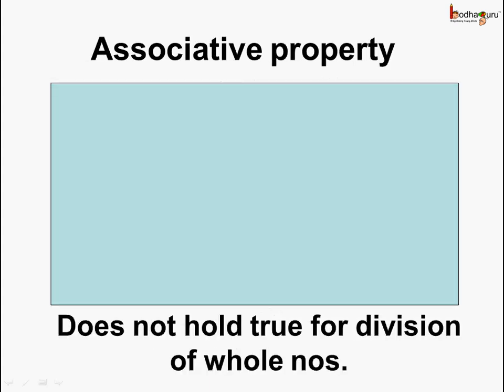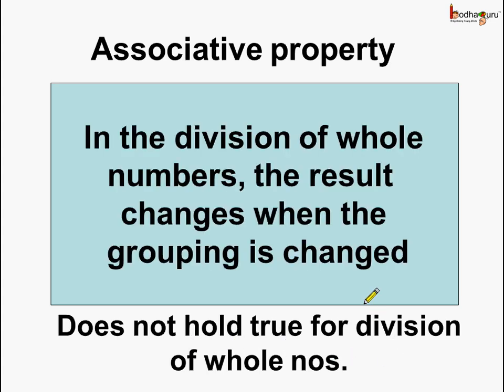So what can we say? We can say the associative property does not hold true for division of whole numbers. In the division of whole numbers, the result changes when the grouping is changed.